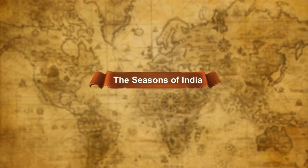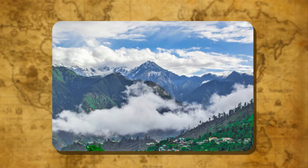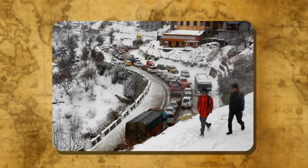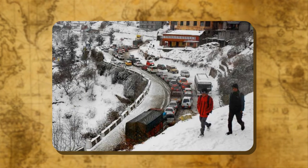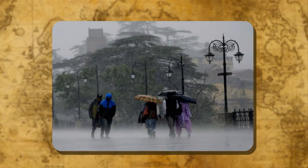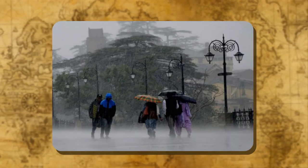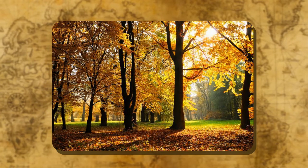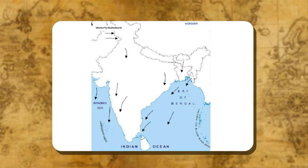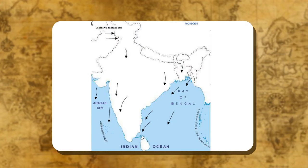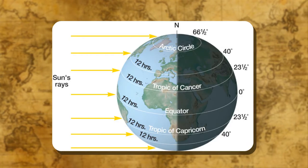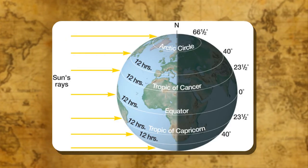The Seasons of India: The Indian climate follows a regular cycle of seasons during the entire year. This cycle has four different seasons: Cold weather season (Winter) — December to February; Hot weather season (Summer) — March to May; Southwest monsoon season (Rainy) — June to September; Season of retreating monsoon (Autumn) — October and November. Cold weather season (Winter): During winter season, cool and dry winds blow from north to south. Winter starts in India in December, when the sun's rays fall directly on the Tropic of Capricorn in the southern hemisphere.